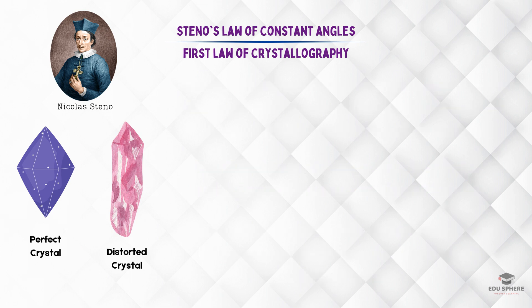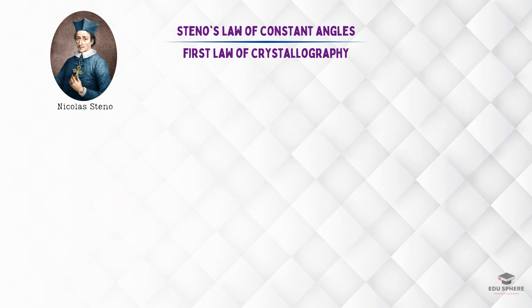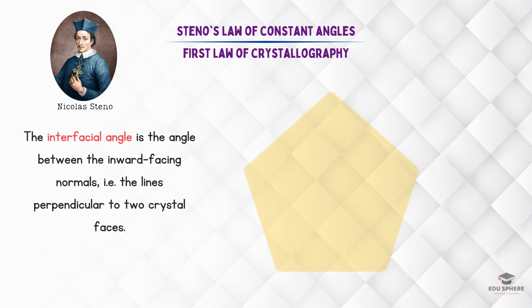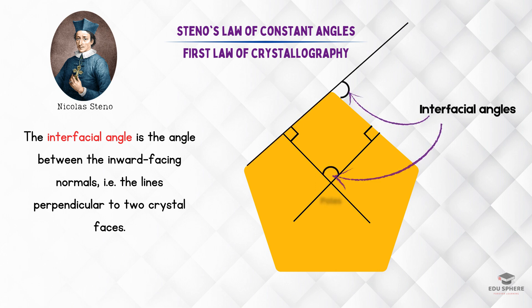So, whether the crystal grew under ideal conditions or not, if you compare the angles between corresponding faces on various crystals of the same mineral, the angles remain the same. Let us now define this interfacial angle of a crystal. In crystallography, the interfacial angle is the angle between the inward-facing normals — that is, the lines perpendicular to two crystal faces. Such lines are called the poles to the crystal face. Keep in mind, this is not the same as the visible angle you see on the outside of a crystal.